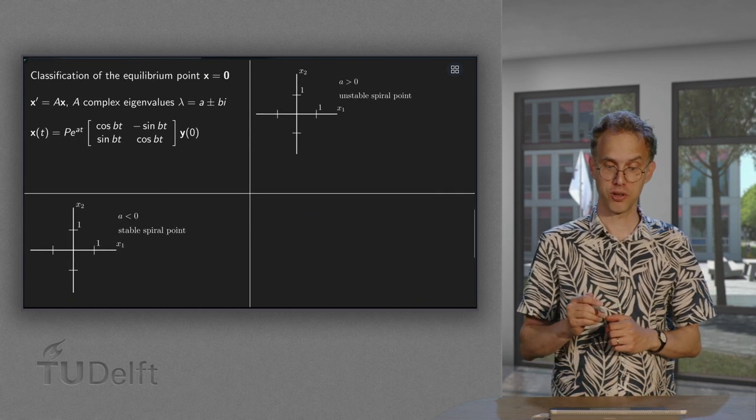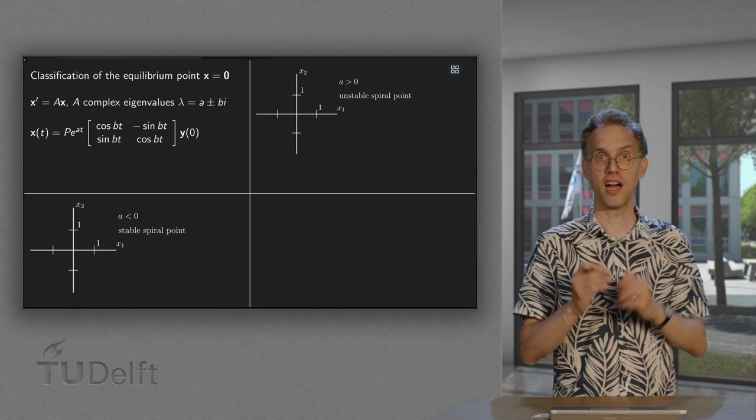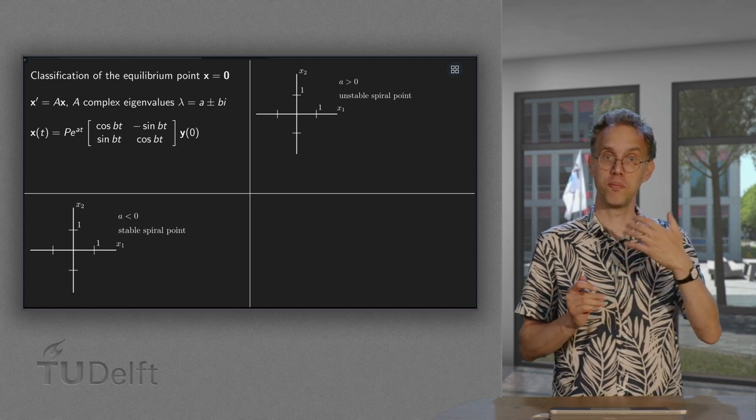Also can have of course a positive. In that case we have like a = 2, 3, 5. We get something like e to the power 5t which is getting bigger and bigger.